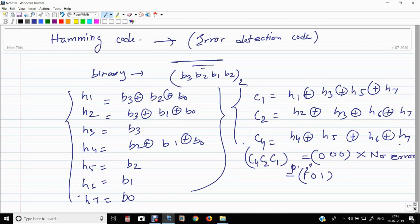This is 2 to the power 2, 2 to the power 1, 2 to the power 0, which is 4 plus 1. Means fifth digit contains error.